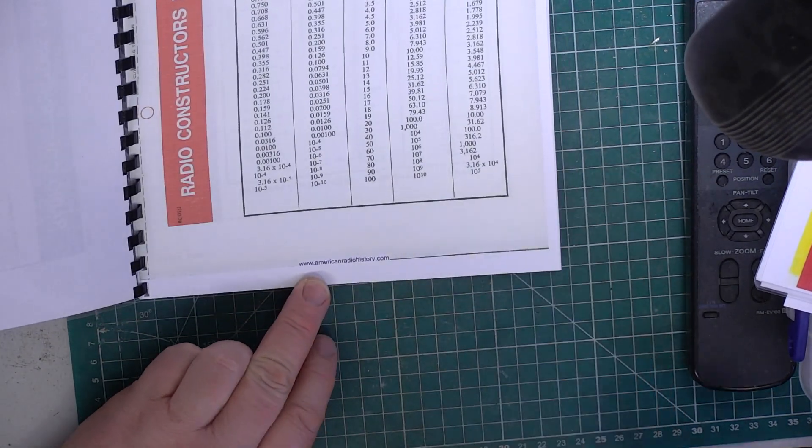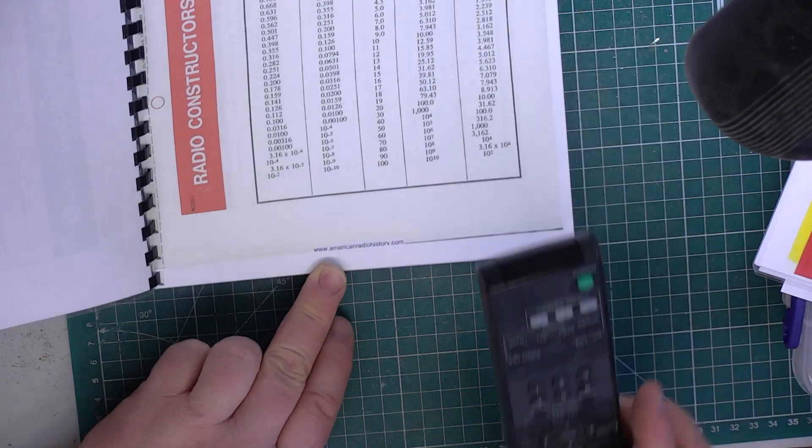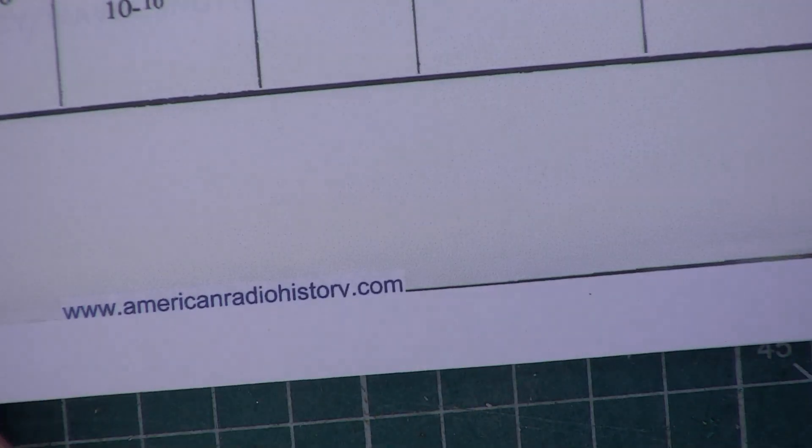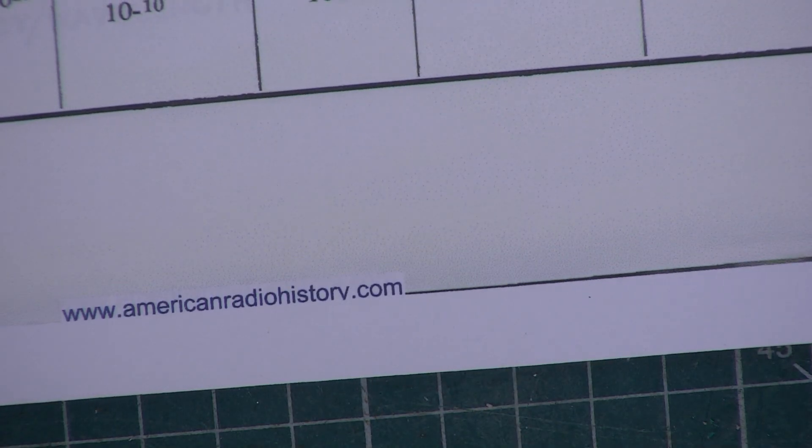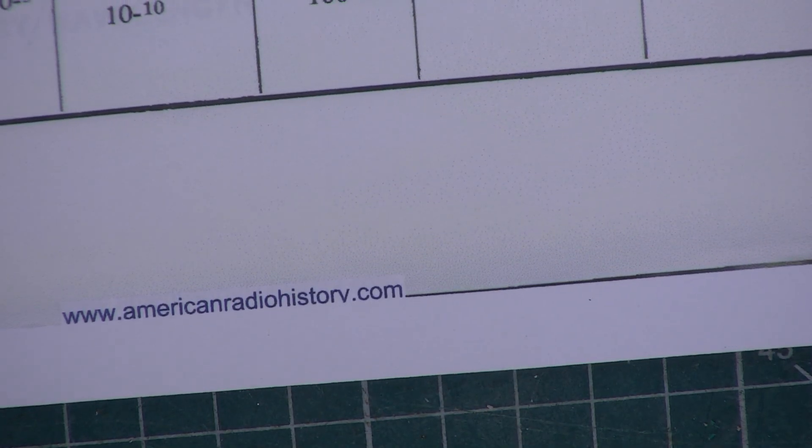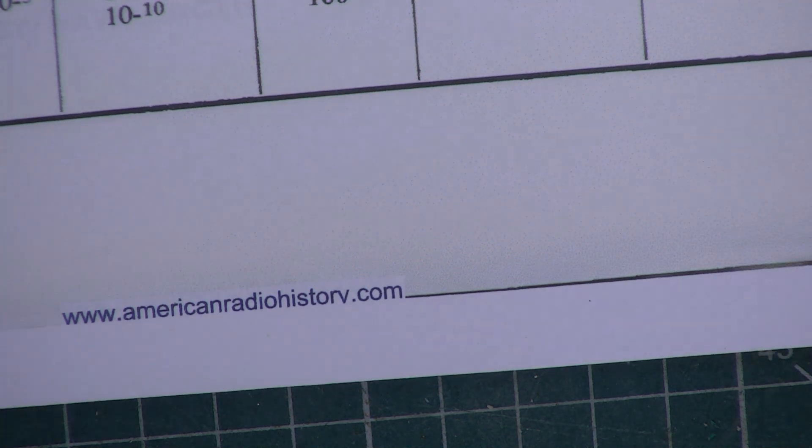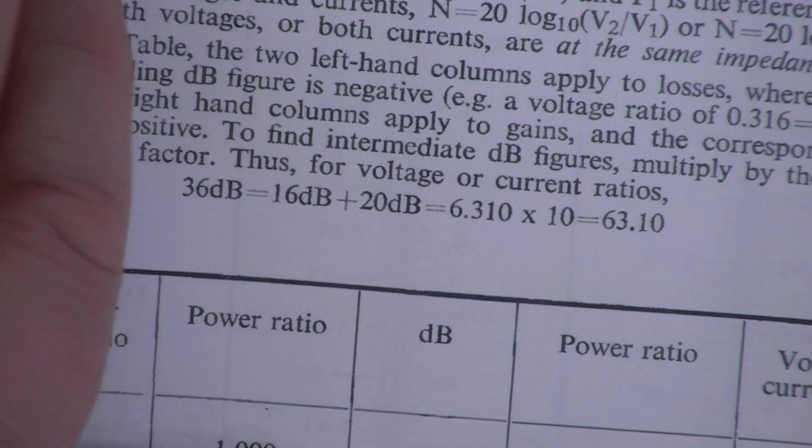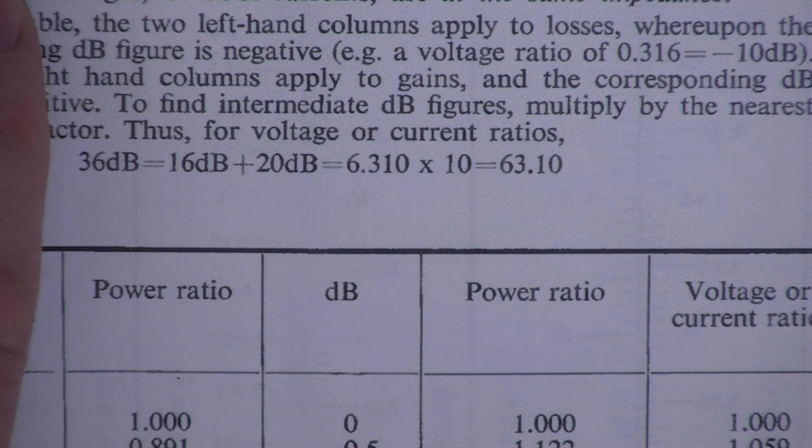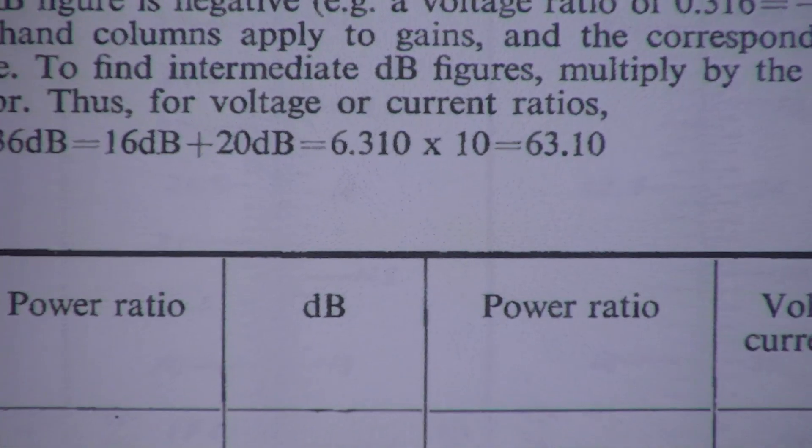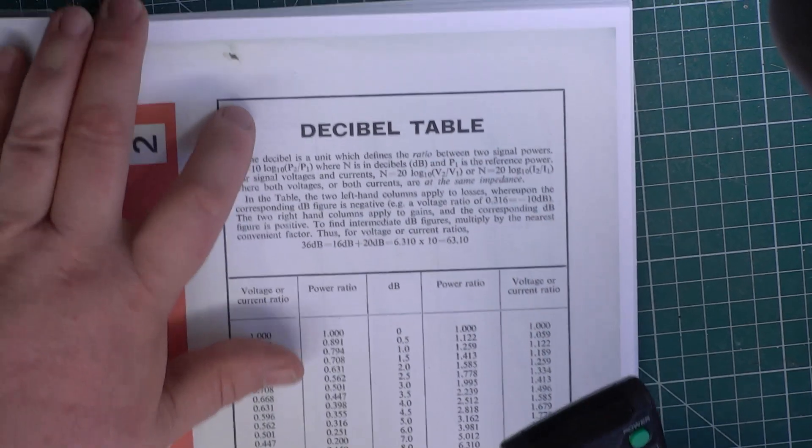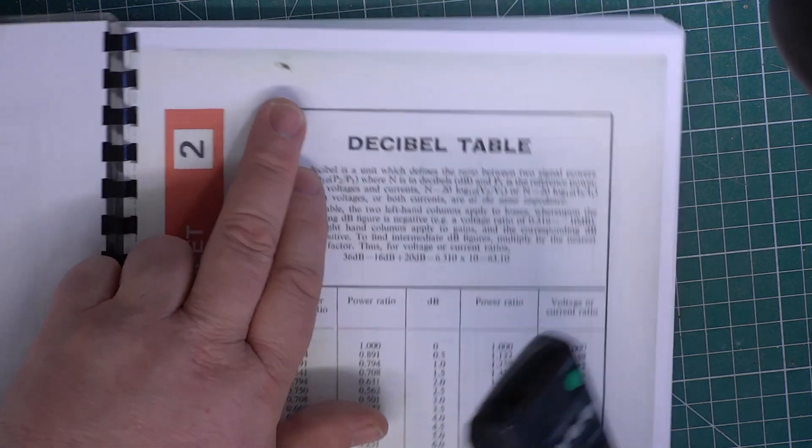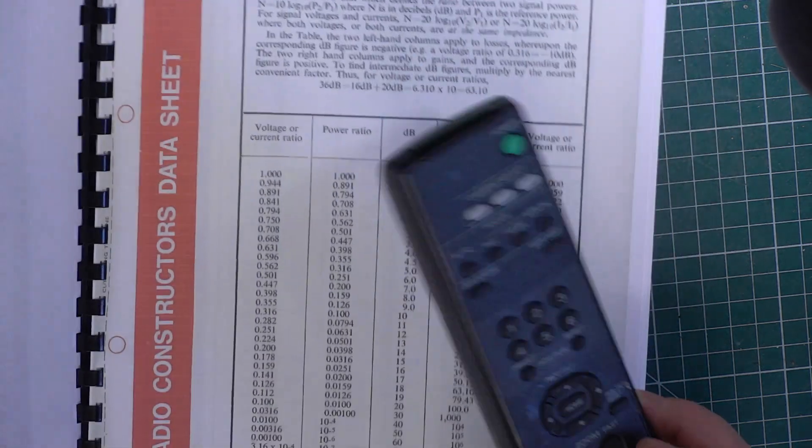I'm going to zoom in on that so you've got the opportunity. AmericanRadioHistory.com. So that's where I've been able to take some from. Oh look, when they scanned that one there was a... I need to zoom out again. Look, there was a squashed fly when they scanned it. It's there forever.